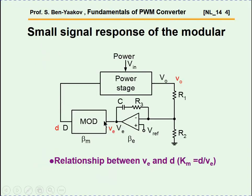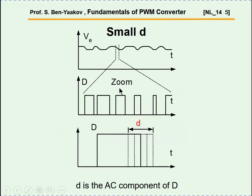Here's another look at the system, and we distinguish between large signal and small signals. Dynamic analysis is normally done on the small signal. The small signal is the deviation of the value from the large signal. We look at the small signal transfer ratios of the system — we have a small signal input, generate a small signal error, and generate a small signal duty cycle. What does this small signal duty cycle mean? Let's look at it more closely.